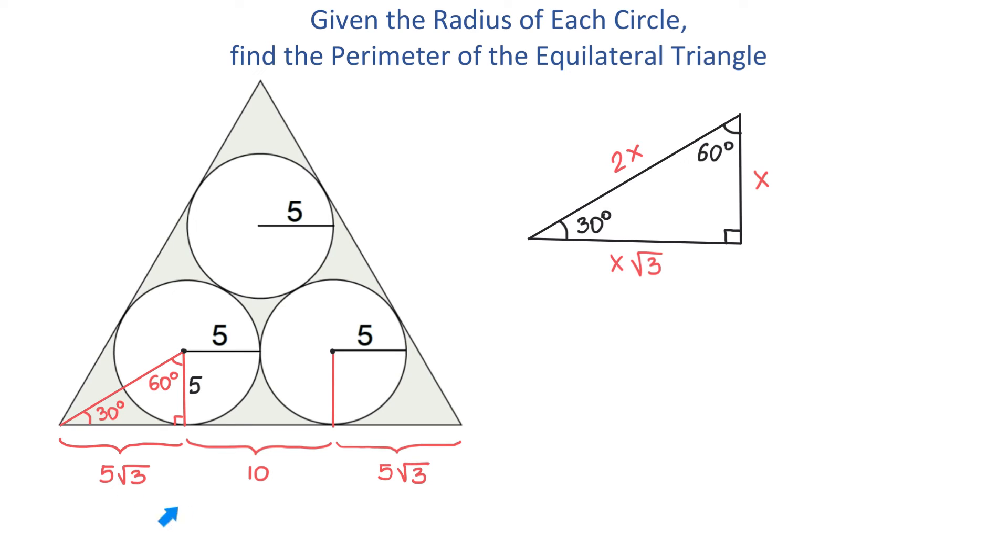Once we have these three numbers, we add them together to get the side of the equilateral triangle. 5√3 plus 5√3 makes 10√3. So this side equals 10 plus 10√3.